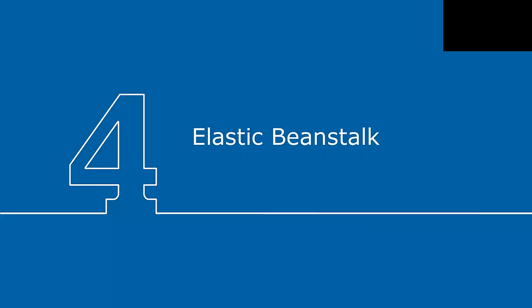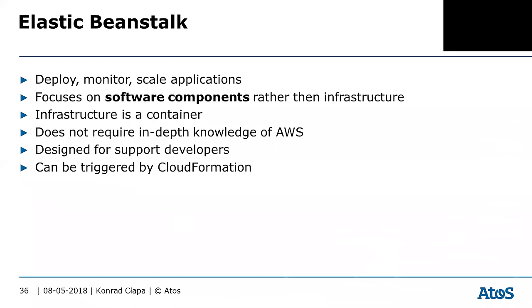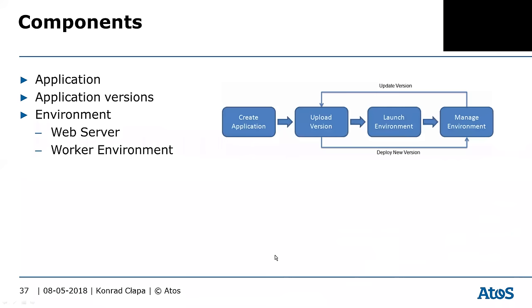The last topic — and maybe the most enjoyable and easiest one — Elastic Beanstalk. Elastic Beanstalk is used for deploying, monitoring, and scaling applications. It focuses on the software component, not the infrastructure. It doesn't require deep knowledge of AWS and is designed for developers. You can also trigger Elastic Beanstalk from CloudFormation templates.